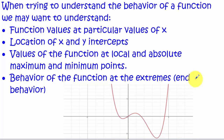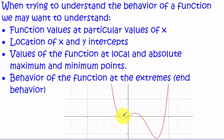We are many times interested in points where the function is at a maximum or minimum value. There are two kinds: relative or local maxes and minimums. This point is a local minimum because it's not the minimum of the entire function — that would be an absolute minimum. This point is a local maximum; it's not an absolute maximum because the graph goes up seemingly forever here.